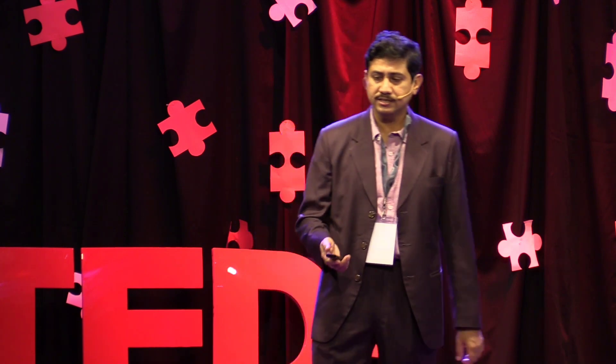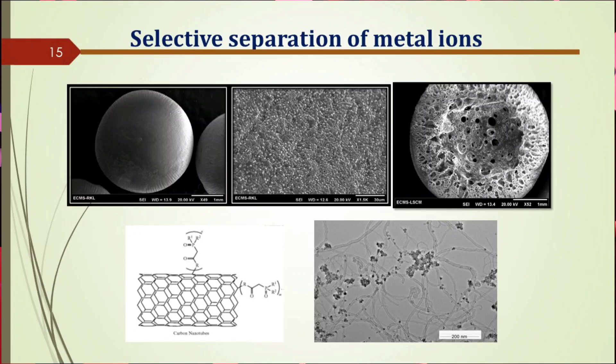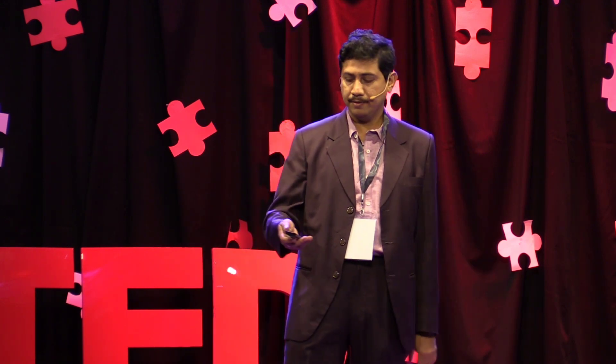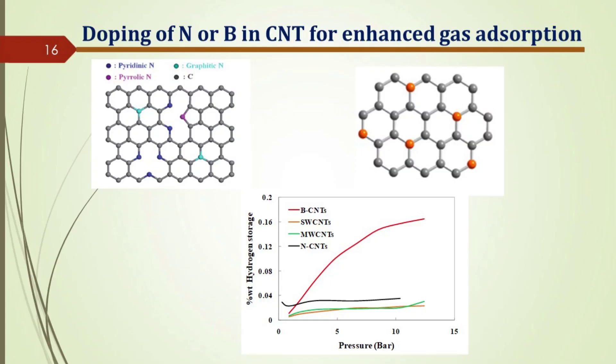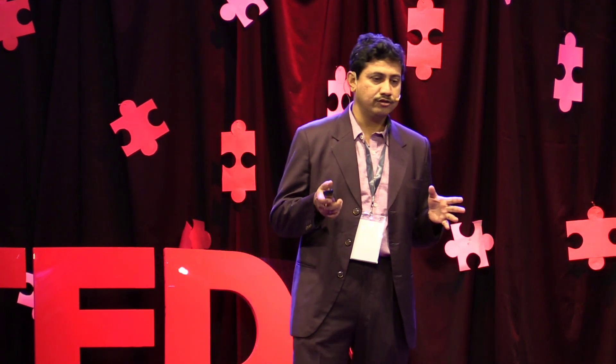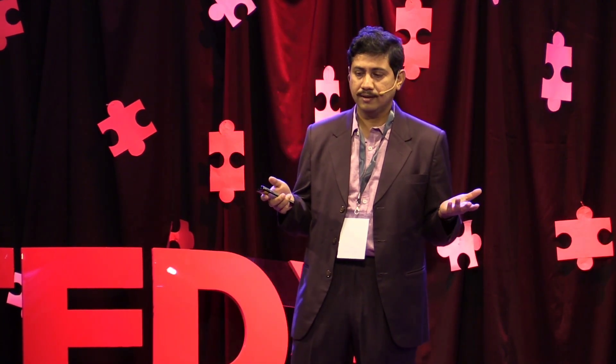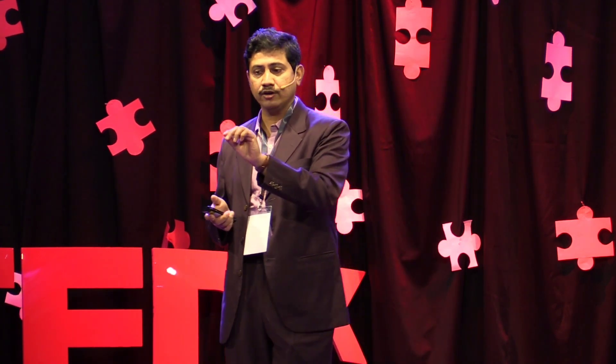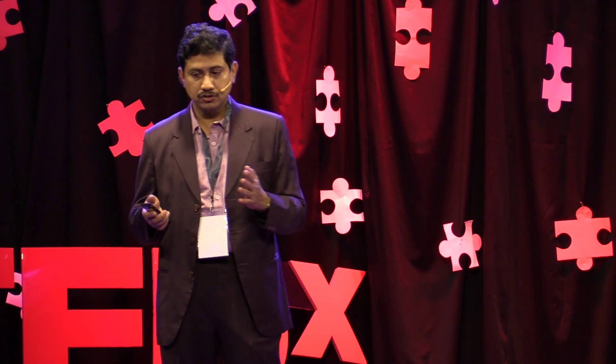Another application is carbon nanotube beads, which can be used for selective separation of metal ions from very dilute solutions. We can also add other atoms like nitrogen or boron into the carbon lattice to change properties. For hydrogen storage, a pure carbon nanotube shows modest results, but adding nitrogen atoms improves hydrogen storage, and adding boron gives a tremendous improvement. By decorating atoms or molecules at the nanoscale, you can really manipulate the properties of the material.